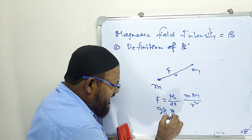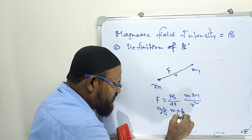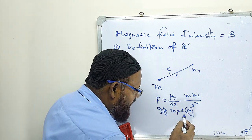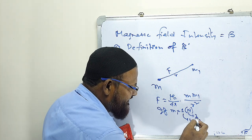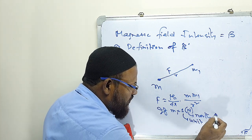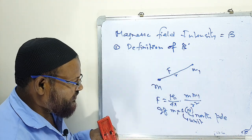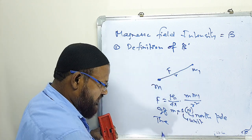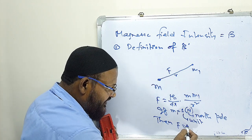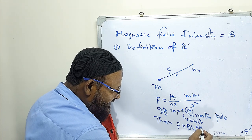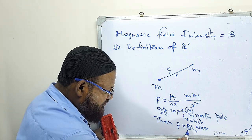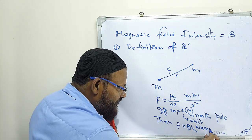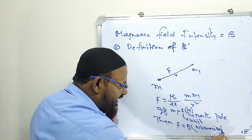If M1 equals 1 — this 1 is the unit of north pole strength — then F equals B. This B is equal in magnitude with F. Only in magnitude they are equal; therefore this is numerically equal.